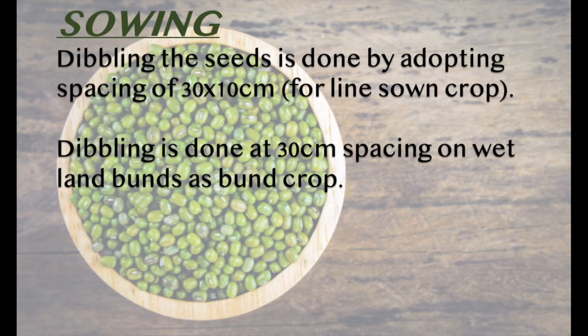Sowing is done by adopting a spacing of 30 × 10 cm. On wetland, sowing is done at 30 cm spacing on bunds as a bund crop.